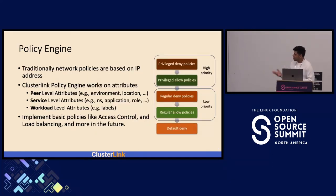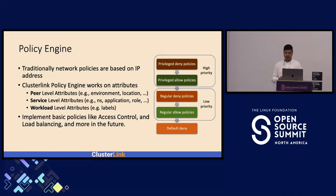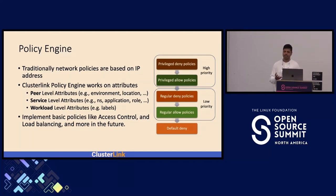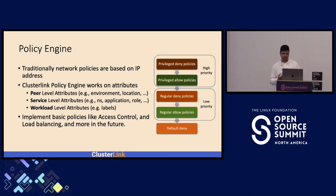Traditionally, networking policies are mostly IP address-based and port number-based. In ClusterLink, policies are designed to be attribute-based, derived from identity. Attributes could be peer-level attributes based on environment or location at peer creation time, service-level attributes such as namespace, application, or role, and workload attributes such as application labels or the port accessing a particular service. This makes policies concise and expressive — for example, only sales can talk to marketing, production traffic should stay within production, or deny all traffic from a certain region. Basic policies like access control and load balancing are implemented, with plans for more in the future.